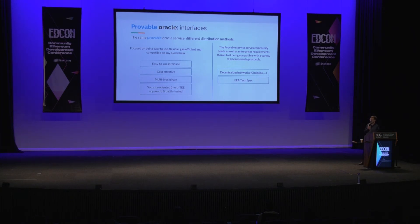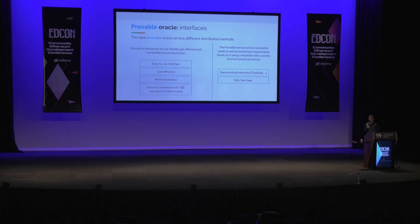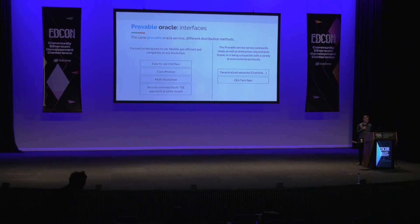Right now, Oracleize can be used either directly — with a sort of centralized interface where you have the guarantee that the answer is authentic but not that it will answer forever — which is the cheapest option because it can be highly optimized. We are also integrating with other decentralized networks so that we can act as an oracle operator there. Chainlink is one of these, and this is important for applications that value decentralization above all and don't care about costs. This will likely be a more expensive option for gas costs, but it gives extra guarantees that it will keep running forever.